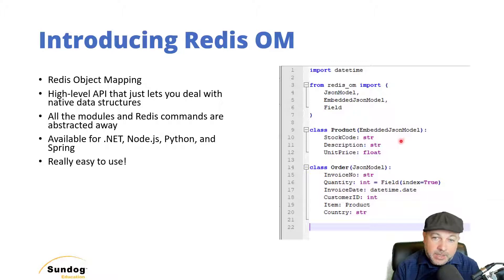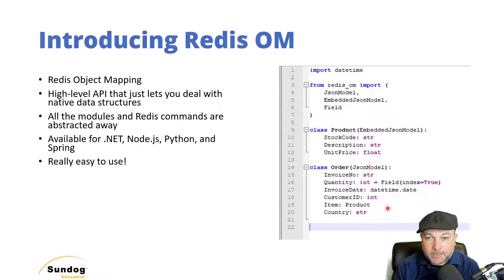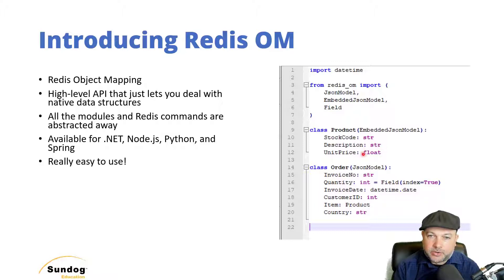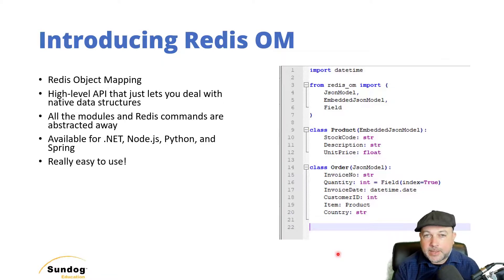Because it's an embedded JSON model, I can embed it within another class. I set up an order class derived from JSON model that contains an invoice number as a string, a quantity as an integer — indexed for searching later — an invoice date, a customer ID, the embedded product class called item, and a string country code. That's Redis JSON and Redis OM. We have enough now to get started and import some data using Redis OM in a structured format.